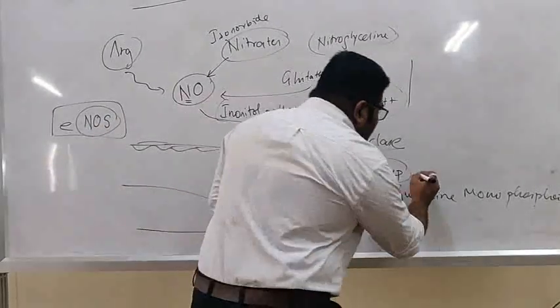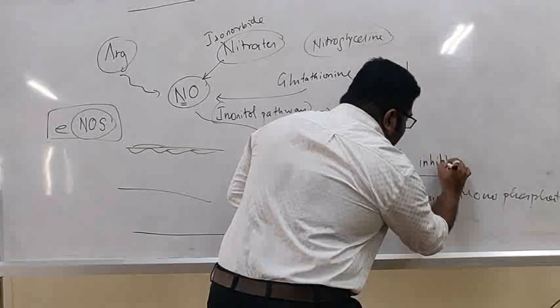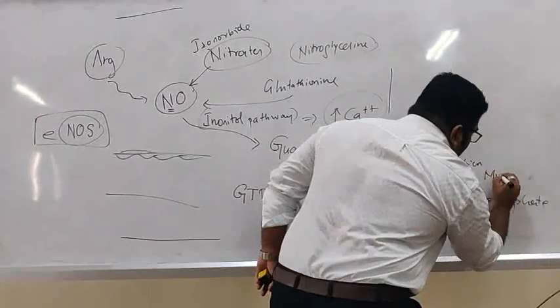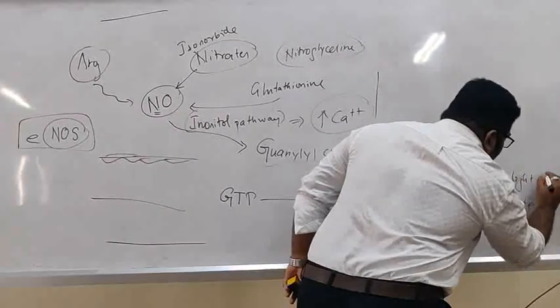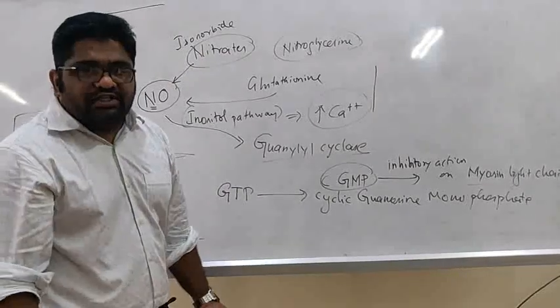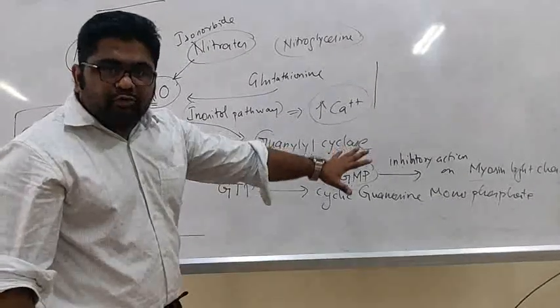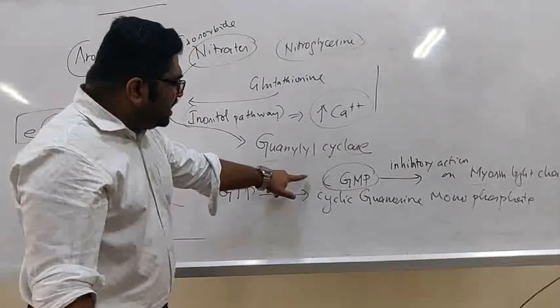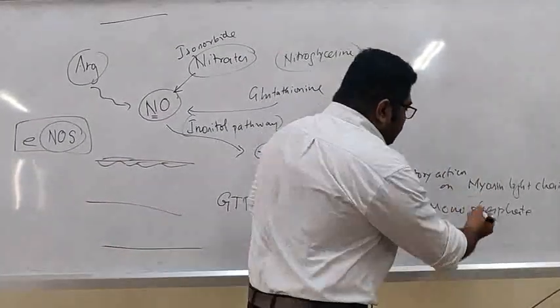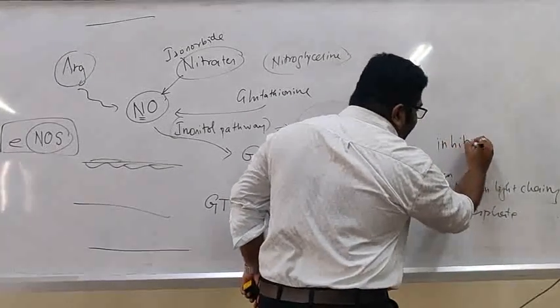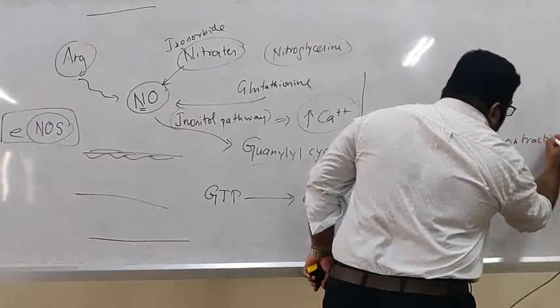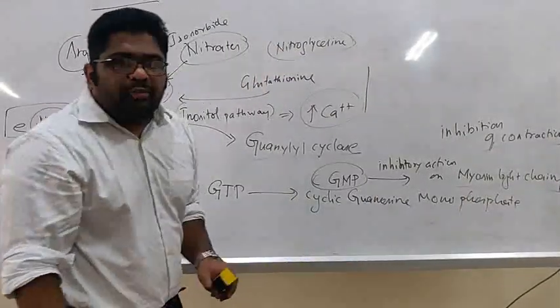Remember, cyclic GMP has inhibitory action on myosin light chains. These myosin light chains on contraction will cause smooth muscle contraction in total, which will cause increase in blood pressure. This cyclic GMP will cause inhibition of the myosin light chain kinase activity. It causes inhibition of contraction. When there is inhibition of contraction, it automatically becomes relaxation.